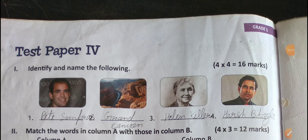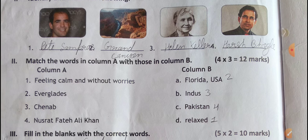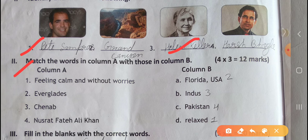Now come to Test Paper 4. Question one: identify and name the following. Question two: match the word in column A with those in column B. In column A, first is 'feeling calm and without worries' — we will match this with D in column B: relaxed.